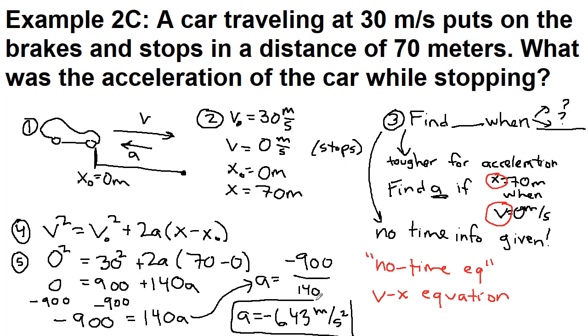And always, always, we end with that step 6 check. So does this make sense? And so let's think about two things here. One, the negative sign. We knew we had an arrow pointing left from our picture, because it's slowing down, and so we definitely expected that negative sign to show up.